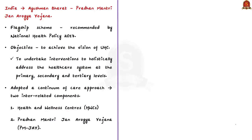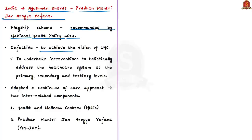Now what about India? For achieving universal health coverage we have Ayushman Bharat Pradhan Mantri Jan Arogya Yojana. Ayushman Bharat is a flagship scheme of Government of India that was launched as recommended by National Health Policy of 2017, to achieve the vision of universal health coverage. This scheme aims to undertake interventions to holistically address the healthcare system at three levels — primary, secondary and tertiary — and has adopted a continuum of care approach with two interrelated components.